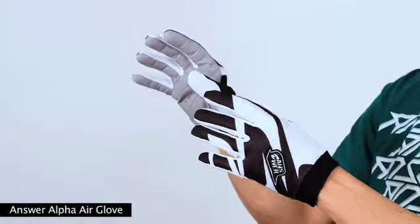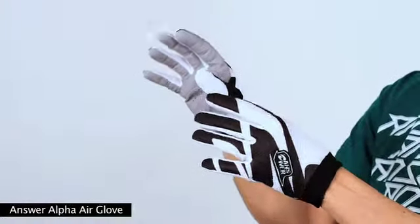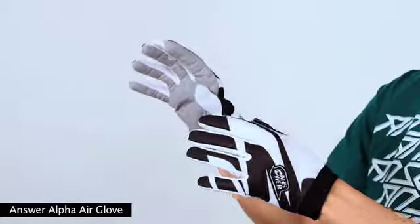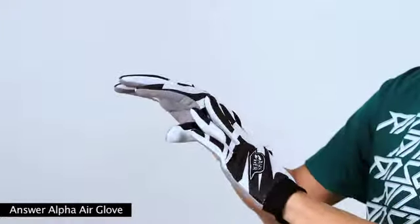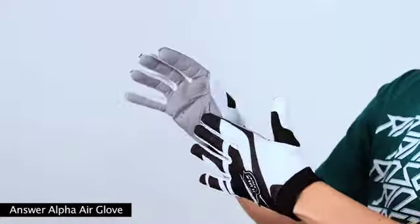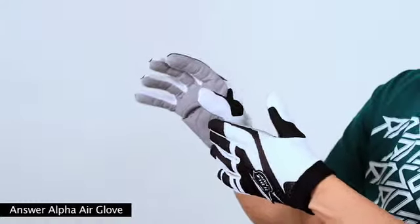The Alpha Air Glove is patterned after the JS Collection premium line of motocross gear brought to you by Answer Racing. With multiple mesh and stretch fabrics on the back hand and finger panels, it creates quite possibly the best fitting glove ever.